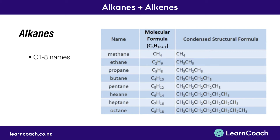Now we'll look at naming alkanes. For level one, you need to know the first eight names of the carbons — that's alkanes with one carbon up to eight carbons in the chain. All of the names end with 'ane', just like the word alkane, so that's easy to remember. All you need to know is the prefix, and these are the same for all hydrocarbons. One carbon is methane, two carbons is ethane, three is propane, four is butane, five is pentane, six is hexane, seven is heptane, and eight carbons is octane. You might recognize some of these prefixes from geometry — a hexagon is a six-sided shape, and hexane has six carbons.